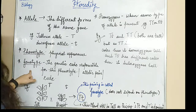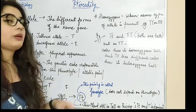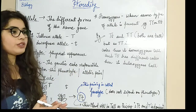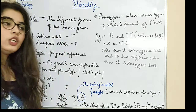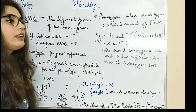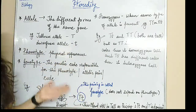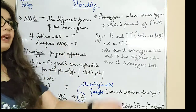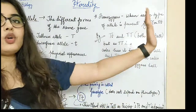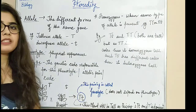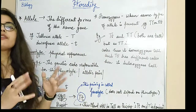What is genotype? Genotype is basically the genetic code responsible for the phenotype. For example, suppose I have two plants — one tall, one short. We can see the phenotype because phenotype is physical appearance. If a plant is tall, its phenotype is tall. If a plant is short, we judge its phenotype as a dwarf plant. That is the phenotype.